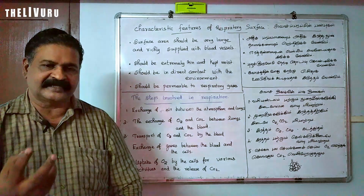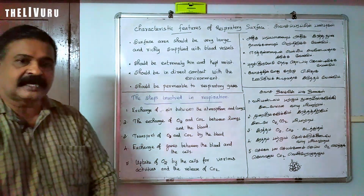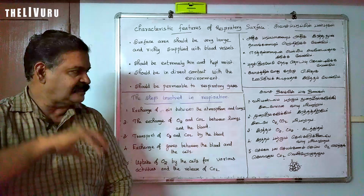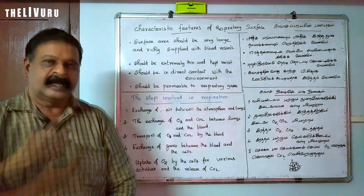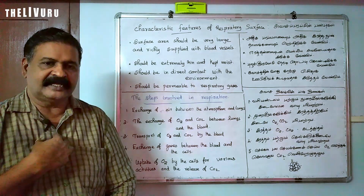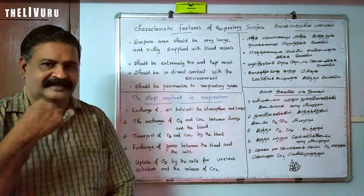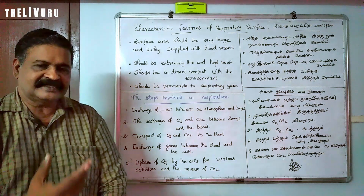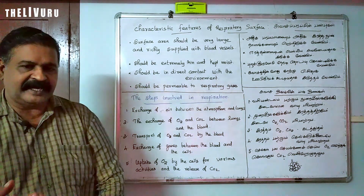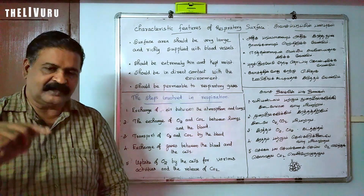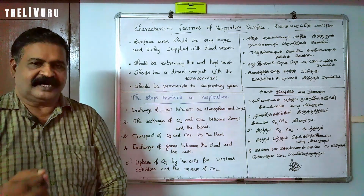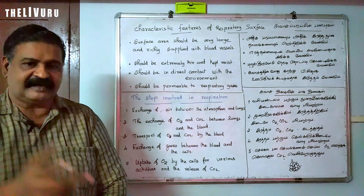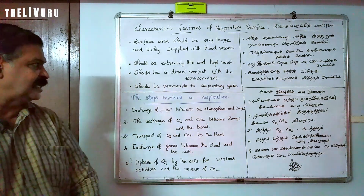It should be moist so that oxygen and carbon dioxide can dissolve. It should be in direct contact with the environment. In the lungs, the alveoli are in very direct contact with the capillaries. The last characteristic: it should be permeable to respiratory gases. Respiratory gases are oxygen and carbon dioxide. The capillaries are very thin and permeable to oxygen and carbon dioxide.